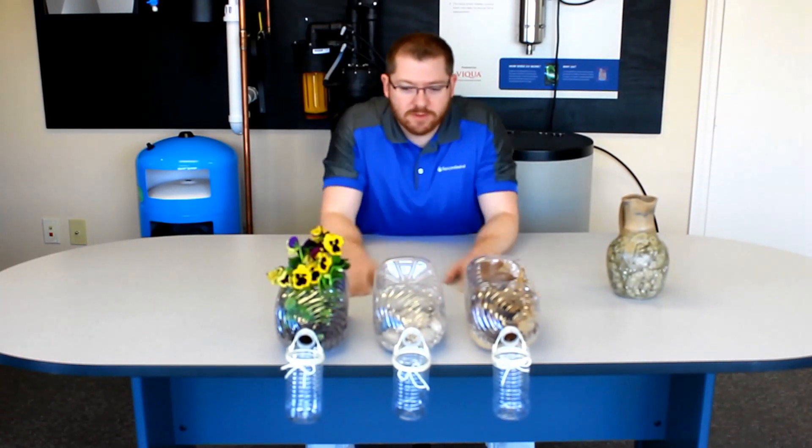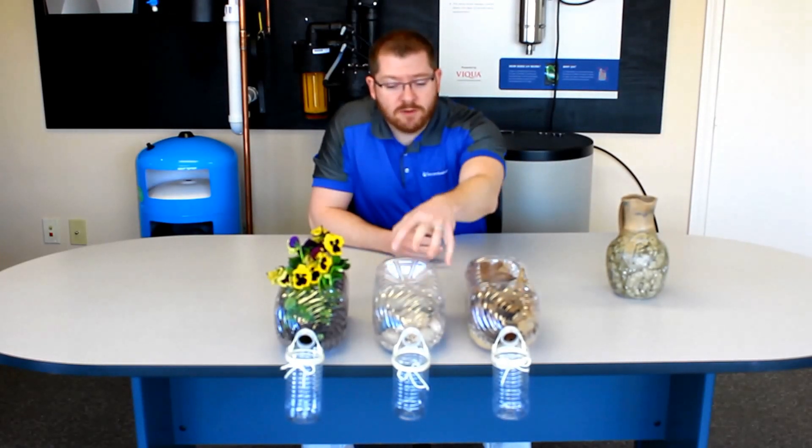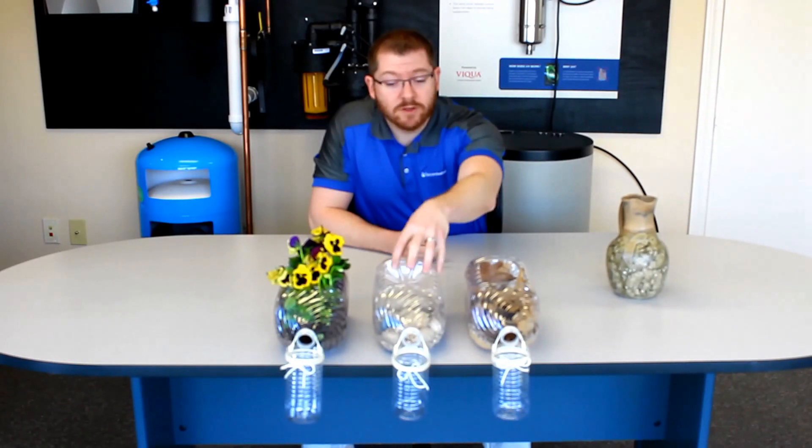So what we have is three different types of material that water can pass through in the earth. This one right here is a mixture of gravel, some sand, and some dry leaves. This one in the middle just has big rocks and some gravel, kind of really simulates the type of material that's in a drilled well. And this one right here we have some flowers and some potting soil.